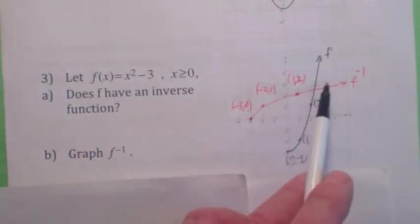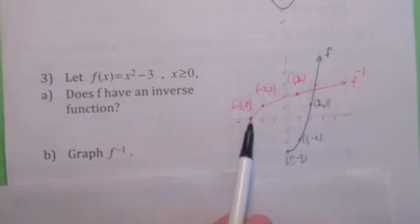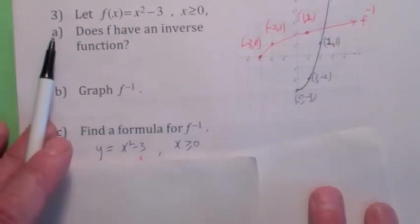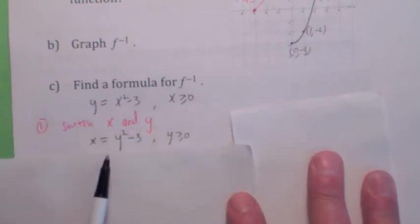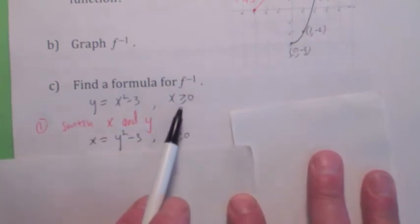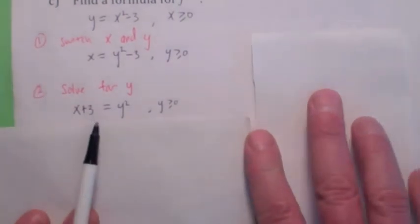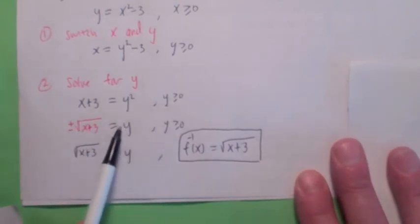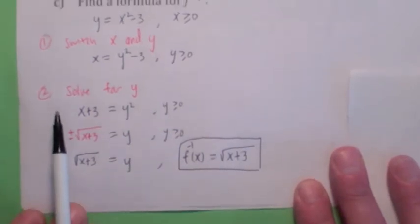It looks like a square root function shifted three to the left. We're finding the inverse of f(x) = x² − 3 where x ≥ 0. Write y = x² − 3, then switch x and y: x = y² − 3 where y ≥ 0. Add 3 to both sides. When you take the square root, you'd normally write ± but since y ≥ 0, we only take the positive root. So the inverse function is √(x + 3).